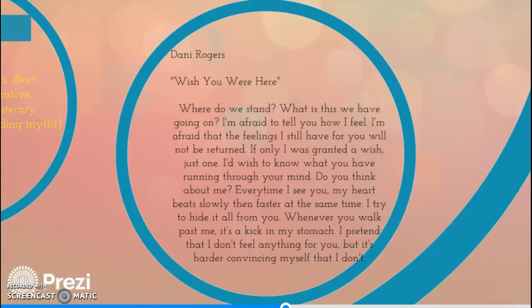Danny Rogers, 'Wish You Were Here.' Where do we stand? What is this we have going on? I'm afraid to tell you how I feel. I'm afraid that the feelings I still have for you will not be returned. If only I was granted a wish, just one. I wish to know what you have running through your mind. Do you think about me? Every time I see you, my heart beats slowly, then faster at the same time. I try to hide it all from you. Whenever you walk past me, it's a kick in my stomach. I pretend that I don't feel anything for you, but it's harder convincing myself that I don't.